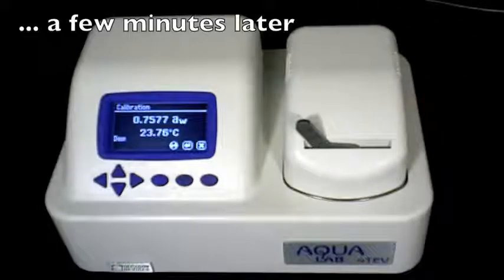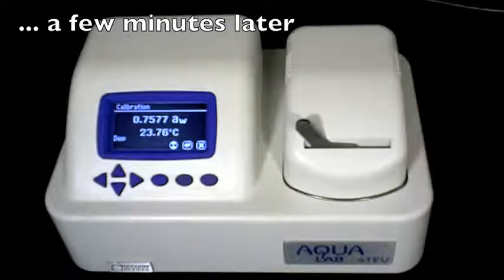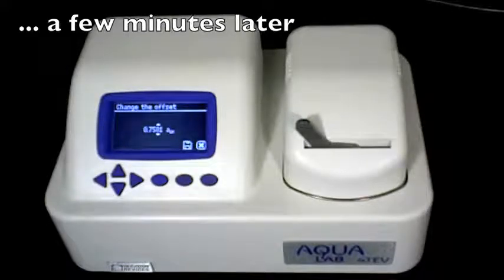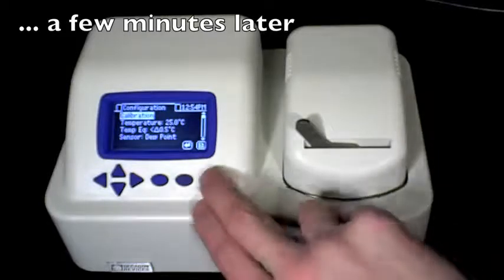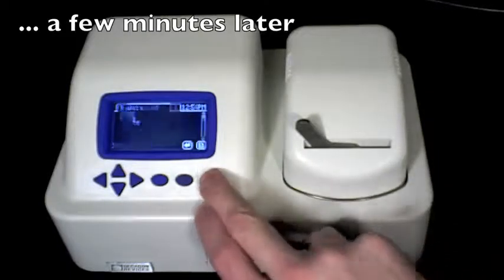After your final reading is displayed, make any necessary adjustments using the up or down keys below the Aqualab display. Please note that if your water activity value is within 0.03 of the standard, no adjustments are necessary. Simply hit the X button, return to the measurement screen, and begin making water activity readings on your product.